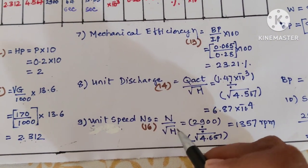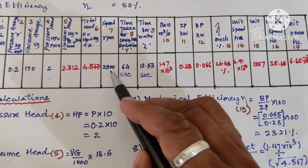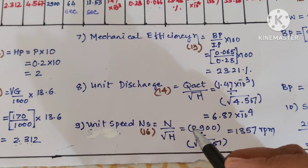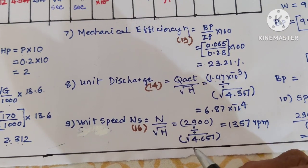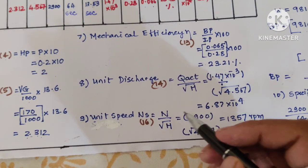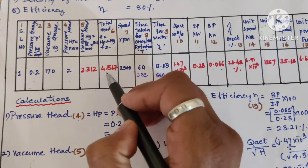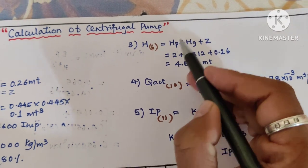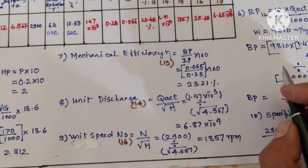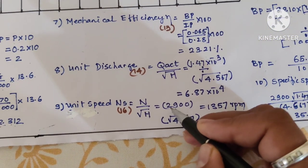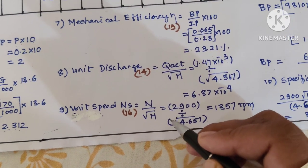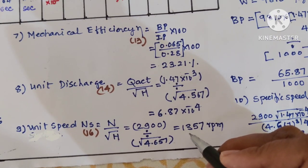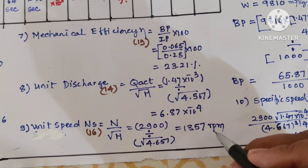Next is unit speed: N / √H. N from tachometer is 2900, so 2900 / √4.657. Total H is the addition of all head values. Substituting 2900 / √4.657, we get 13.57 rpm.